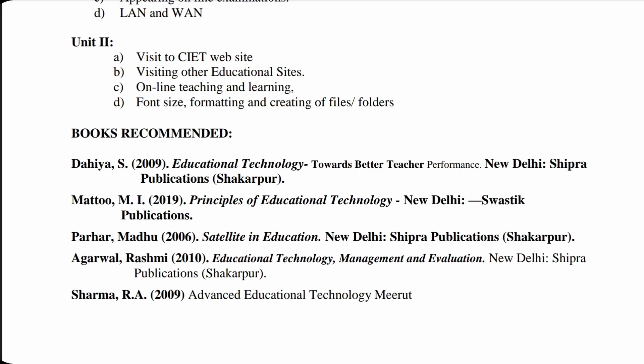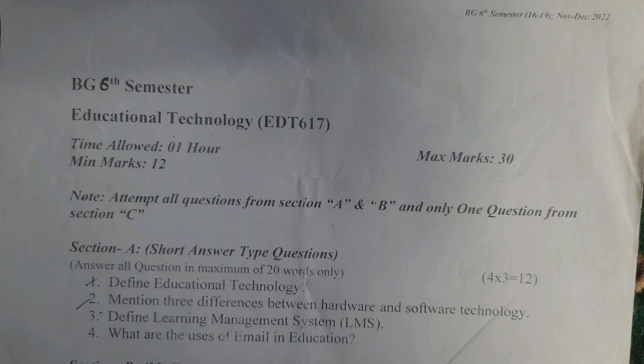Now let us discuss the model question paper for BG sixth semester skill enhancement course educational technology EDT617. Time allowed: one hour; maximum marks: 30; minimum marks: 12. Note: attempt all questions from Section A and B, and only one question from Section C. Section A — short answer type questions: answer all questions in maximum 20 words only. 4 × 3 = 12 marks.